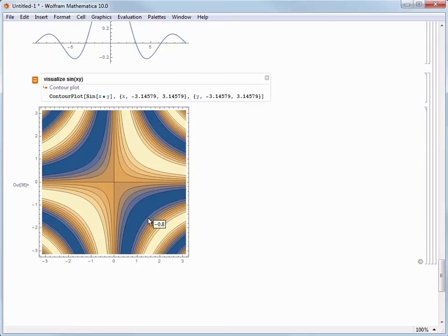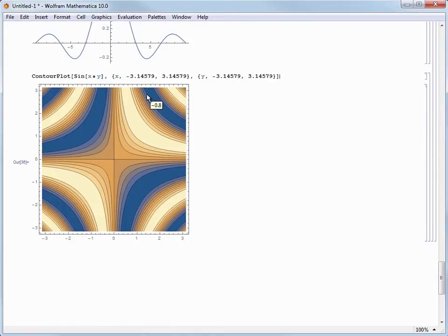And, of course, like we've seen previously, we can click on the Wolfram Language command in the bottom half of the Freeform Input box to remove the Freeform Input command entirely, and now we can edit the command directly.